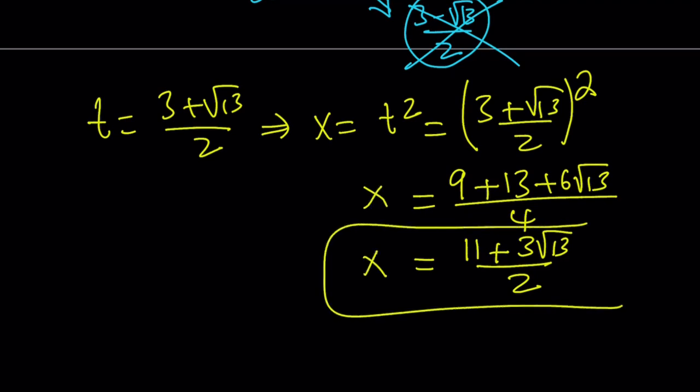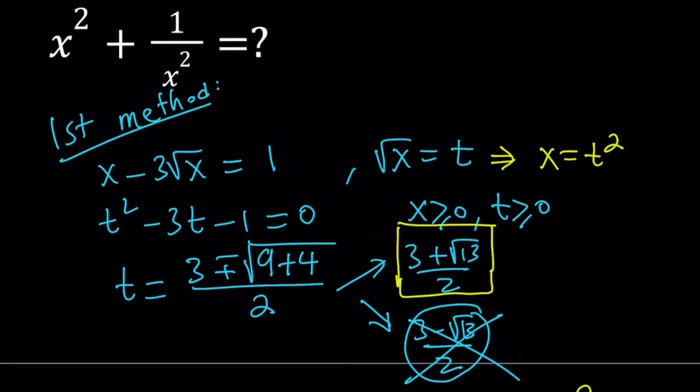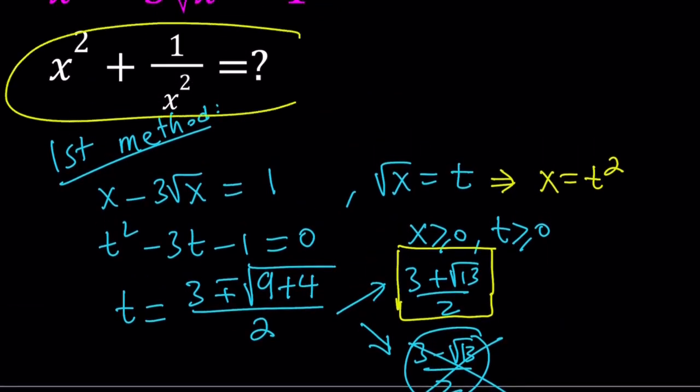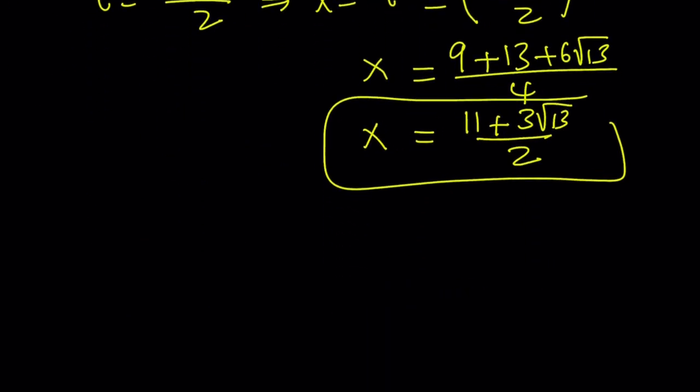But remember, we are trying to evaluate something else. We need to evaluate x squared plus 1 over x squared. But I have the x value, so I can easily find x squared from here. I just need to square this expression one more time. And I know this first method is kind of very brute forcey, but sometimes you don't have an option and you just use it. I just want to introduce multiple methods.